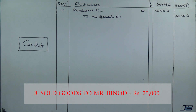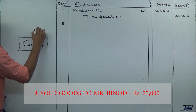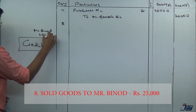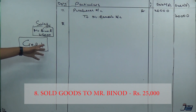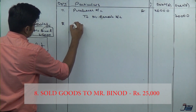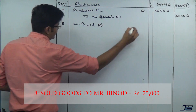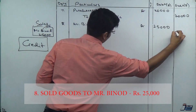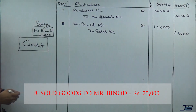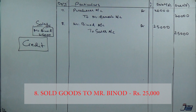Entry number eight: sold goods to Mr. Binot, rupees 25,000. The same rule applies — medium of exchange not mentioned, name is given, so it is a credit transaction. Usually cash or bank is debited, but here we use the person's name. So: Mr. Binot Account debit to Sales Account, amount 25,000.